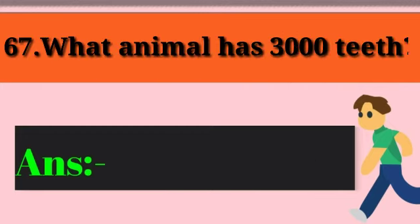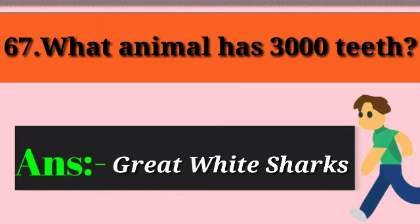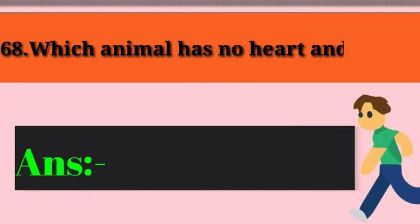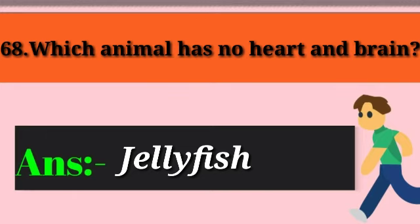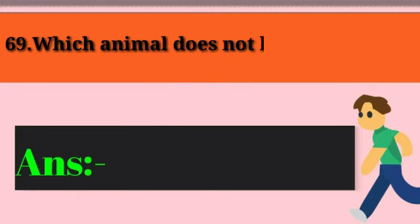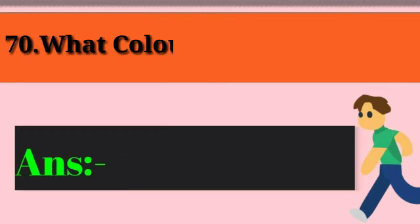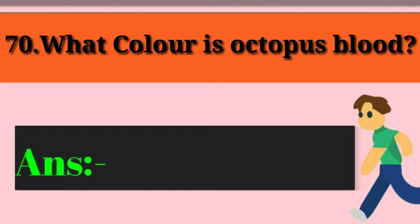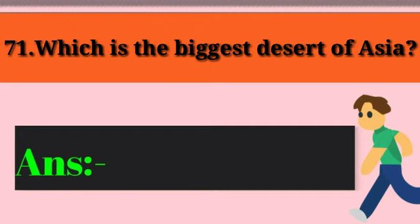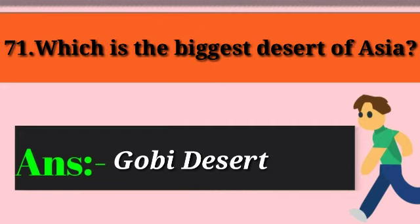Question 67: What animal has 3,000 teeth? Answer: Great White Shark. Question 68: Which animal has no heart and brain? Answer: Jellyfish. Question 69: Which animal does not have red blood? Answer: Spiders. Question 70: What color is octopus blood? Answer: Blue. Question 71: Which is the biggest desert in Asia? Answer: Gobi Desert.